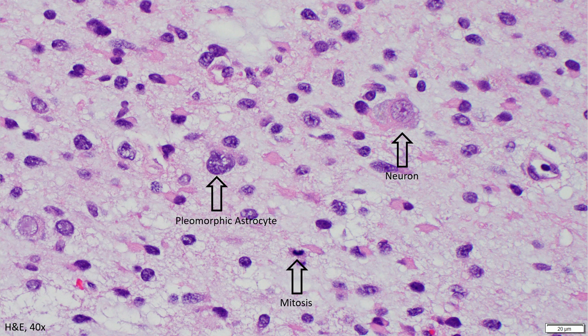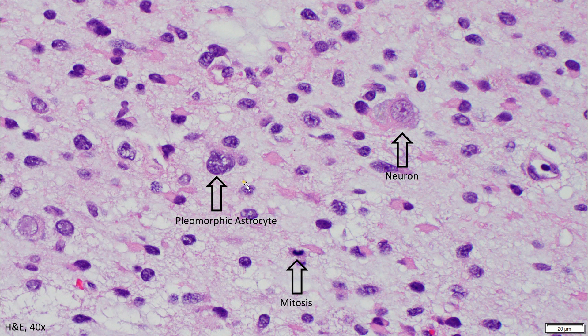Here is a mitotic figure labeled for reference. So this tells us that we have a diffuse glioma, and the amount of atypia we see tells us that this is probably an astrocytoma and not an oligodendroglioma.